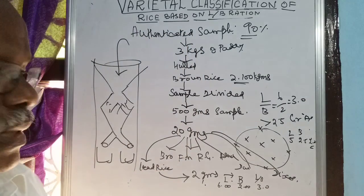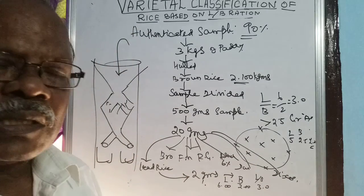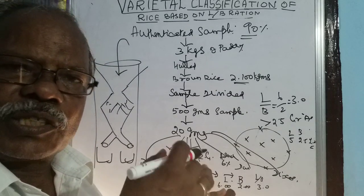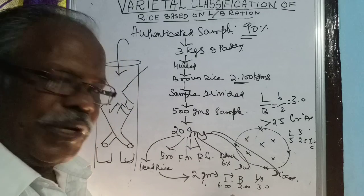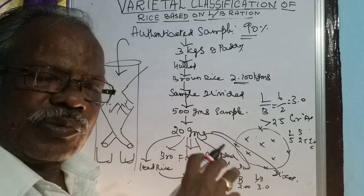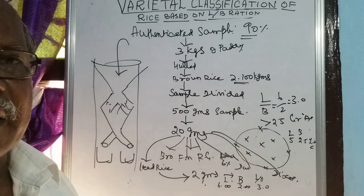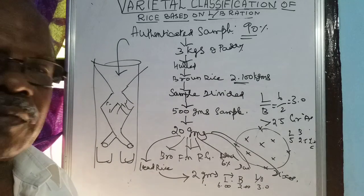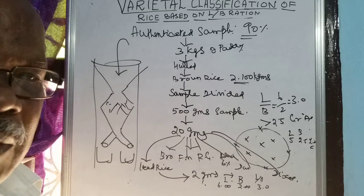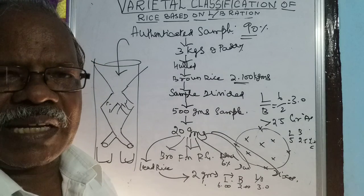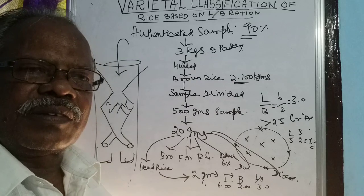When the LB ratio is more than 2.5, the grain is classified as Grade A. When it is less than 2.5 — for example, length 5 mm, breadth 2.5 mm, giving ratio 2 — it is classified as common. The admixture should not exceed 6%; if more than 6% of a different variety is present, it should be downgraded to common. All 100% purity — zero admixture — is required for Grade A classification.